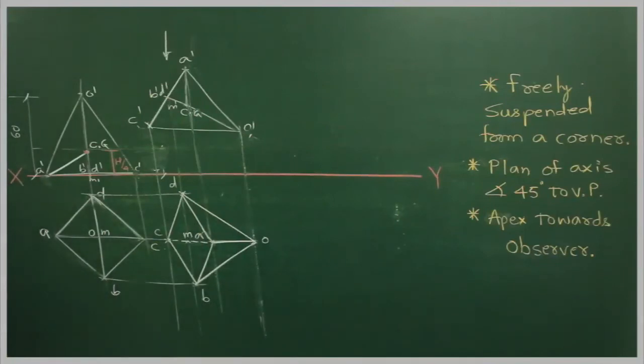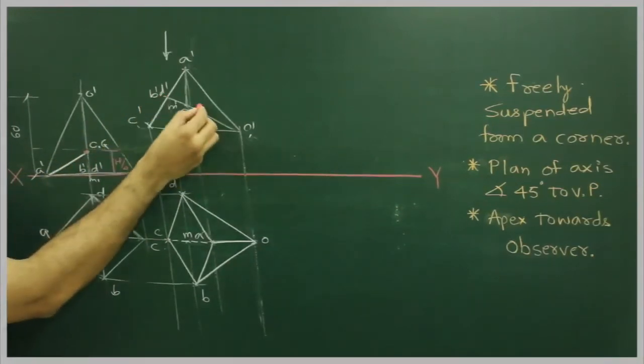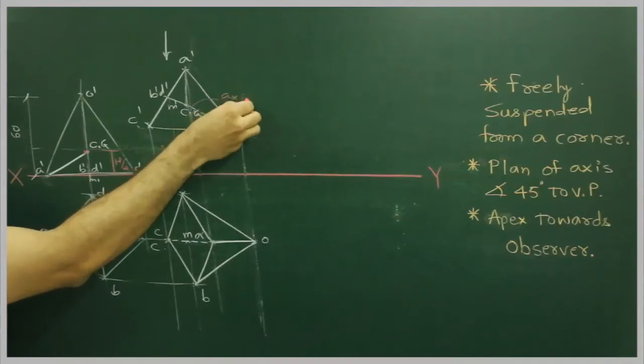Now they want us to draw plan of axis inclined 45 degree to VP. Now what do we mean by plan of axis? Top view of axis. If you see this is original axis.